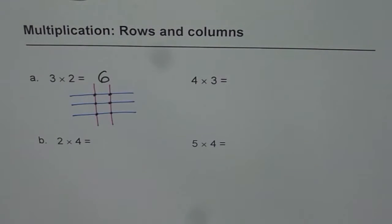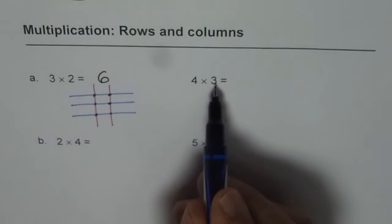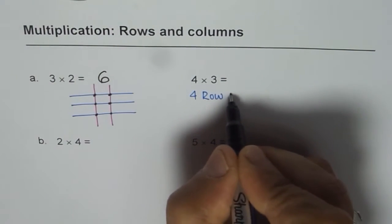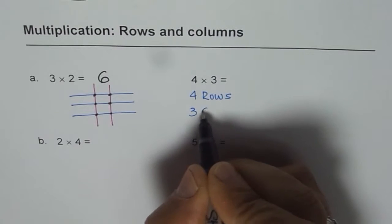Let us try whether it works or not. 4 times 3, that means 4 rows and 3 columns.